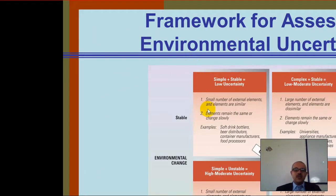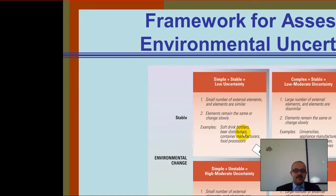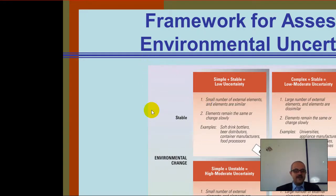We've got four types of companies. On the top are stable environments, and on the bottom, they are unstable environments. On the right, it's a complex environment, and on the left, it's a more simple environment. Let's look at the first block: simple and stable.